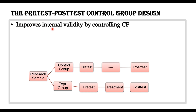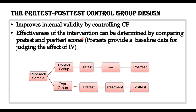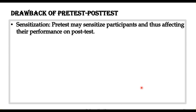This design offers more improvement and more control of internal validity because we are controlling confounding variables and we have the pre-test score, giving us a better view of the variables before the treatment. The effectiveness of the intervention can be determined by comparing pre-test and post-test scores. This pre-test score provides baseline data for judging the effect of the independent variable — by subtracting the pre-test score from the post-test score we can find the effect of the treatment.